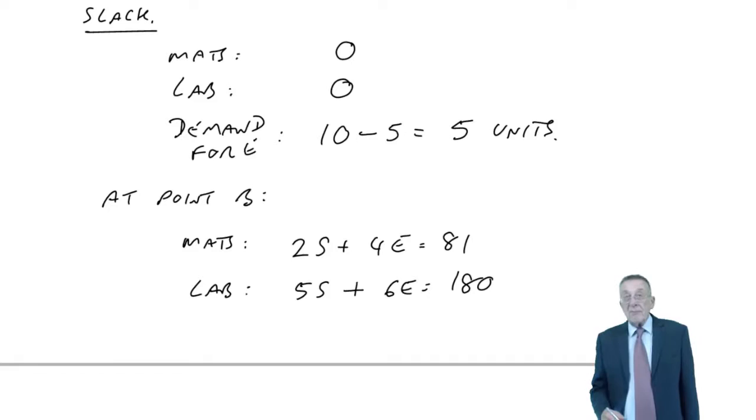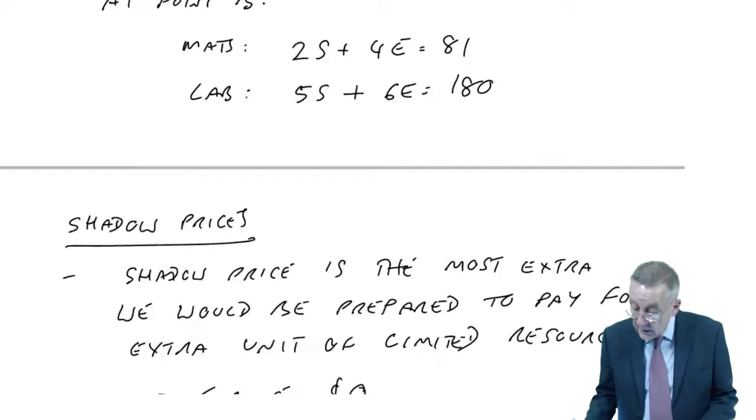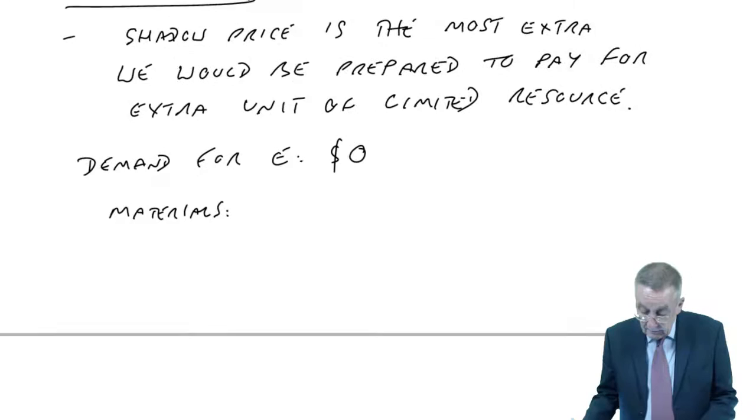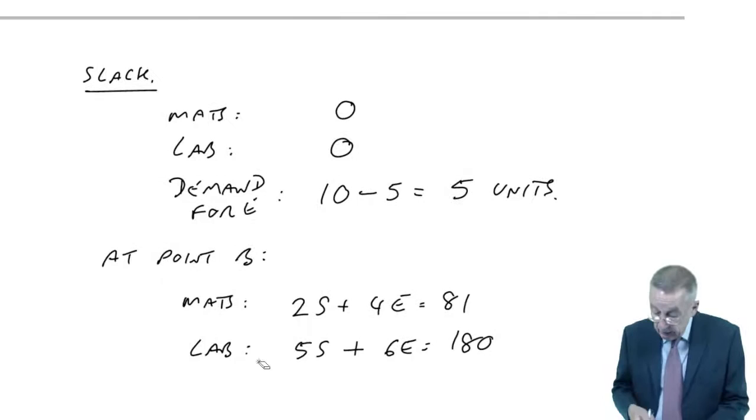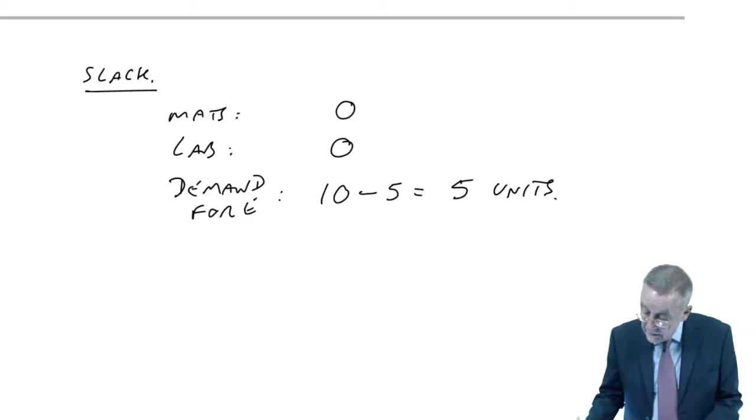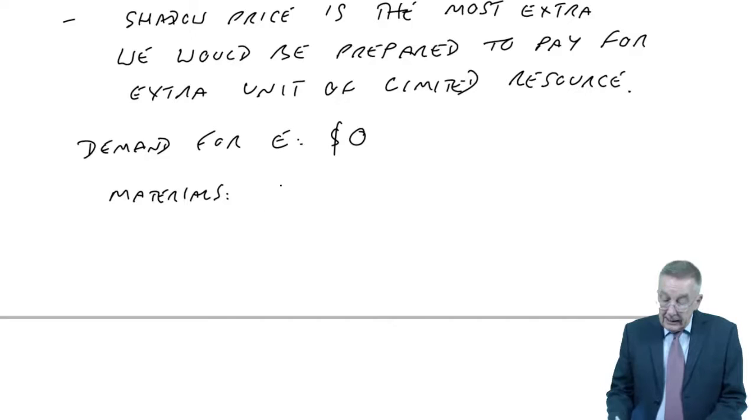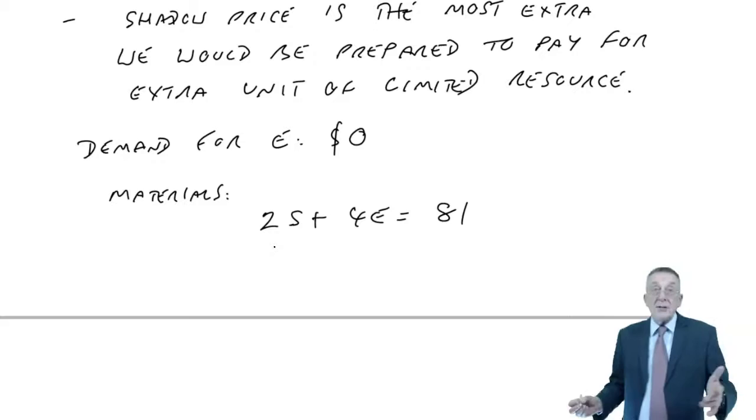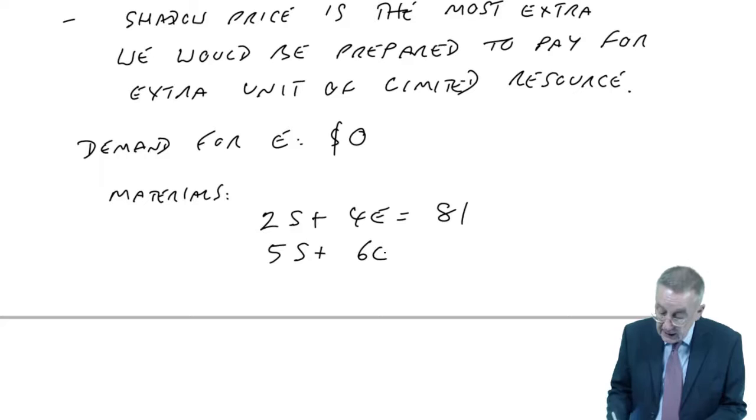The materials constraint was 2s plus 4e equals 80, but if you have one more kilo, it now equals 81. The labour constraint doesn't change, we only look at each one individually. So labour would stay the same at 5s plus 6e equals 180. I apologize, let me rewrite this correctly.